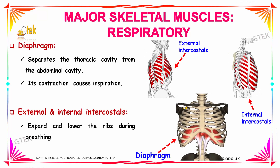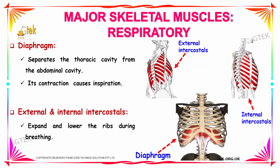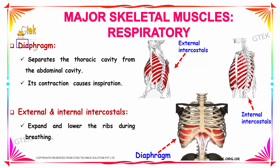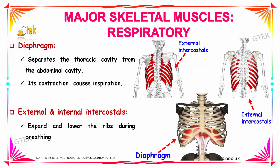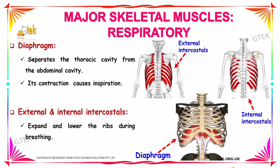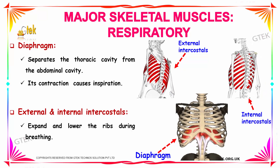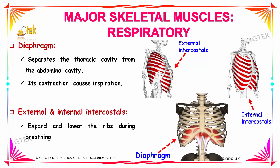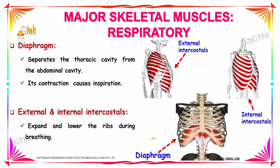Next we are going to see the muscles related to the respiratory process of a human. The first and very important muscle that plays a major role in respiration is the diaphragm. You can see the movement of the diaphragm here. It separates your thoracic cavity from the abdominal cavity. It contracts and causes inspiration and expiration. The respiration process is controlled by the diaphragm muscle, making it an important muscle of the human body.